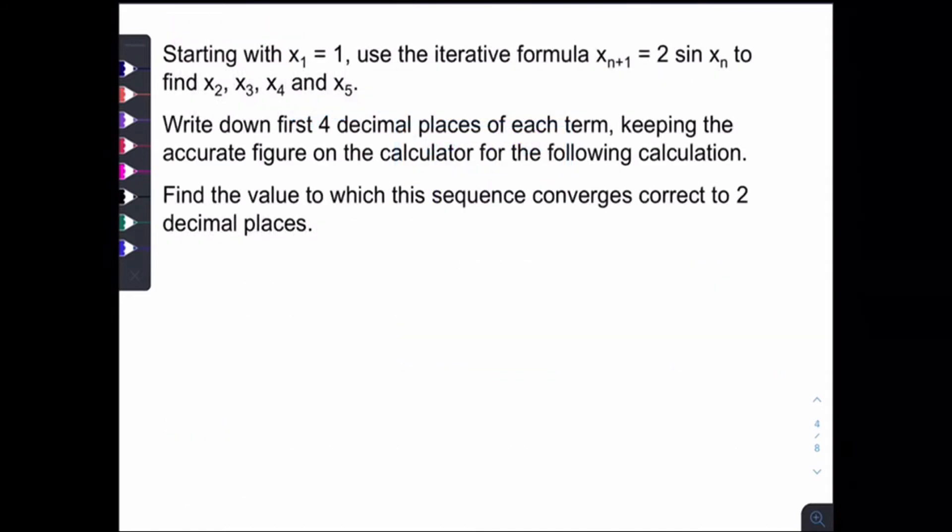Now let's see how we can use the iterative formula to solve this equation. So according to the question, starting with x1 equals to 1. So the initial value, the first value is given, which is 1. And you are asked to use this iterative formula to find x2, x3, x4, and x5. So read the question carefully.